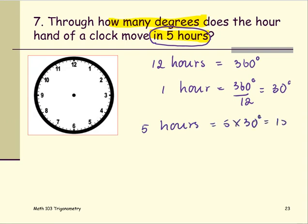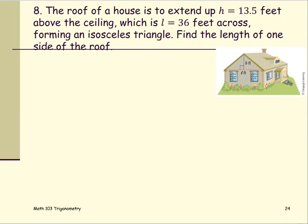In this problem, the roof of the house is to extend up h = 13.5 feet above the ceiling, which is l = 36 feet across, forming an isosceles triangle. Find the length of one side of the roof. Let's redraw the triangle that we're going to work on.